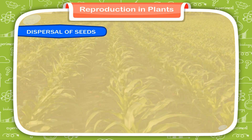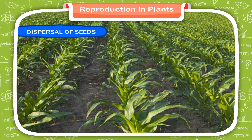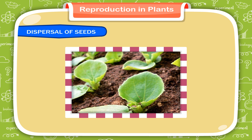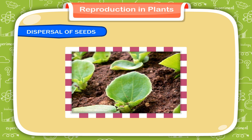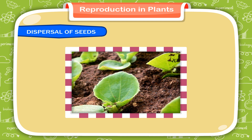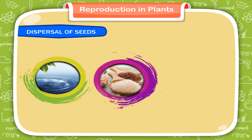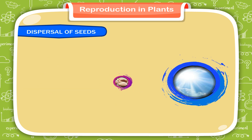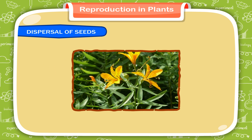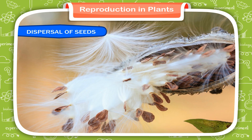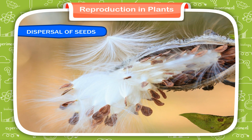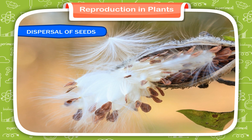Dispersal of Seeds. Plants need adequate space to grow properly. If all of them grow under the parent plant and do not get enough space, many of them will die. When they will not get enough water, mineral salts or sunlight required for them to grow, they will fight against each other for their needs and the weaker ones will die. That is why seeds need to be scattered away from the parent plants. This process of scattering or spreading of seeds to different places is known as dispersal of seeds.